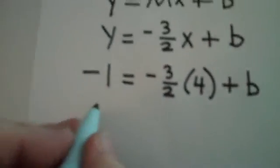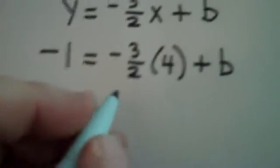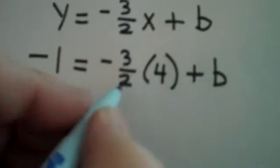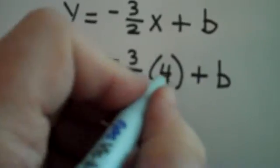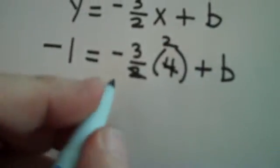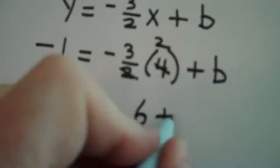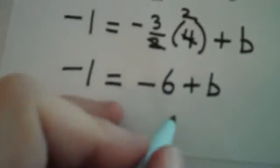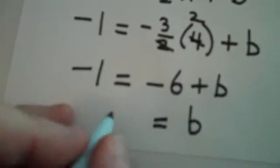Well, watch what happens. This is so cool. -1 equals, we're multiplying here, so we use the gazenta rule, right? Remember gazenta? 2 gazenta 4 twice. There you go. -3 times 2 is -6. And when I solve that equation for b by adding 6 to both sides, I end up getting b is 5.